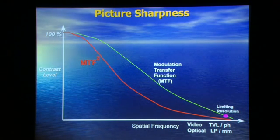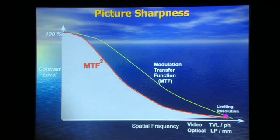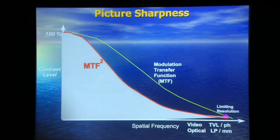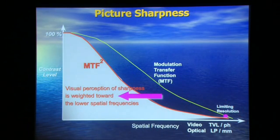What Schade said was: this is what's important. The shape of this curve and the area under that curve is very dependent on the shape of that curve. So what he said is this is what's stimulating your eye and your brain. And it's not about whether I have a thousand lines of resolution or two thousand lines of resolution. Note what happens when you square the curve — the curve moves to the left. So the visual perception of sharpness is weighted towards the lower and mid band frequencies, and a lot less towards the high end.